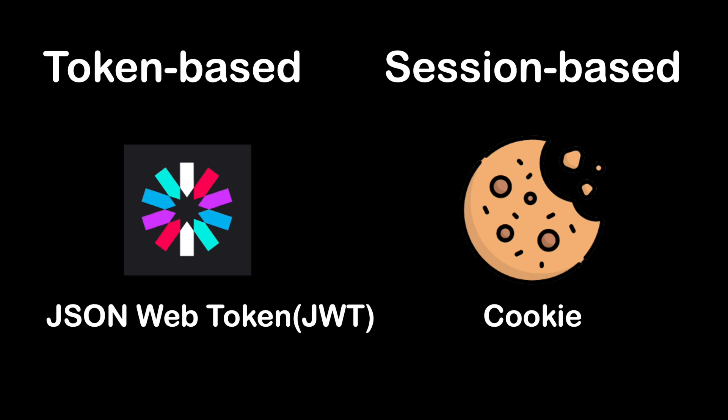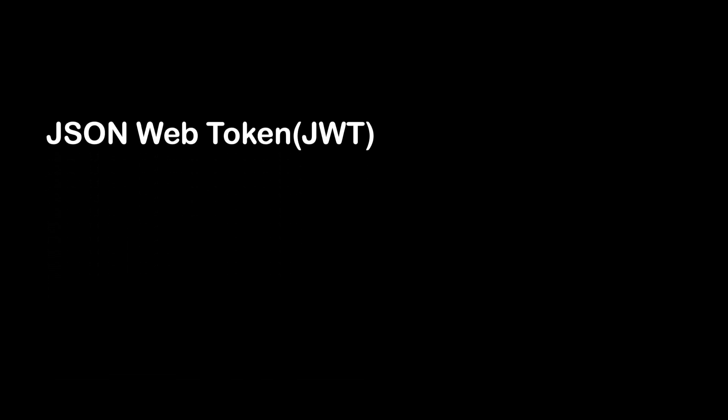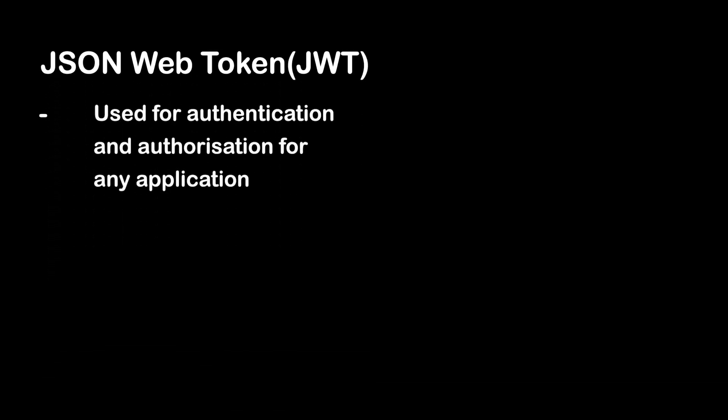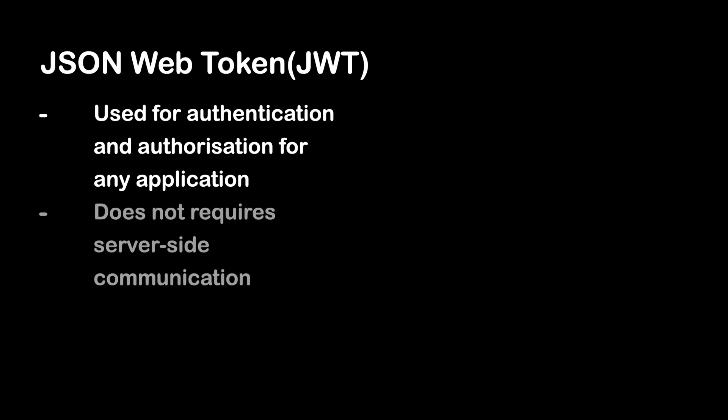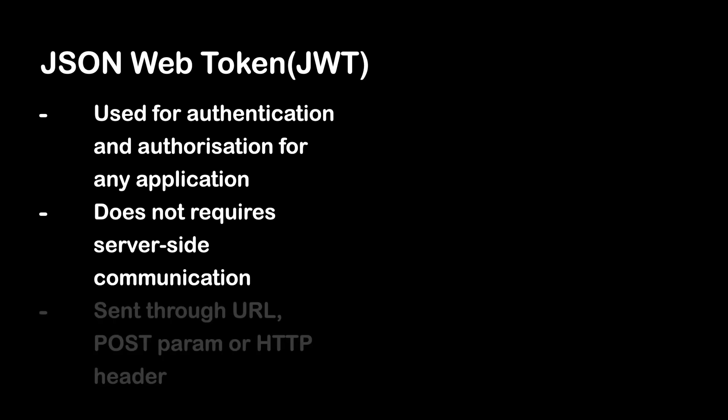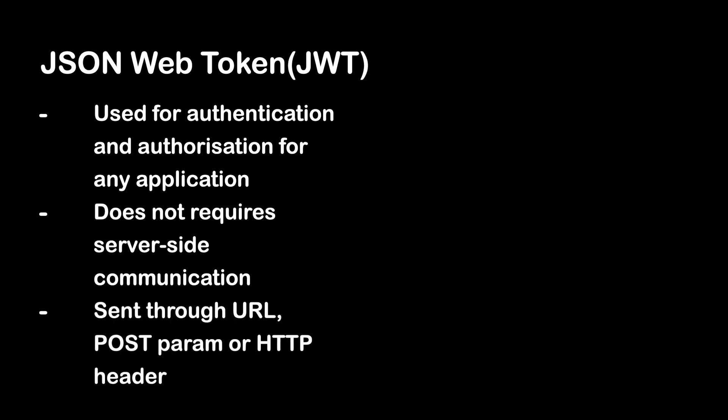JWT is commonly used for authentication and authorization for any application. The verification of JWT does not require any communication between the servers and databases. Because of its relatively small size, a JWT can be sent through a URL, through a POST parameter, or inside an HTTP header, and it is transmitted quickly.